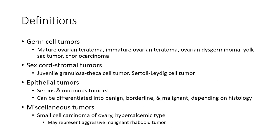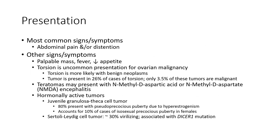Mucinous tumor and small cell carcinoma of the ovary, hypercalcemic type, may represent aggressive malignant presentations. The most common signs and symptoms are abdominal pain and/or distension. Other signs and symptoms include fever, and torsion is an uncommon presentation for ovarian malignancy.